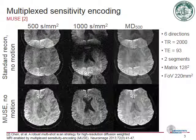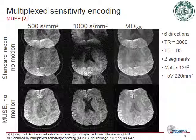Even with prospective motion correction, phase differences due to diffusion weighting gradients can lead to substantial ghosting artifacts in multi-shot DWI, as shown in the upper row. The MUSE algorithm makes it possible to determine the phase of each k-space-based segment. The phases are then included using the coil sensitivities, leading to artifact-free images in the final reconstruction, as shown in the lower row.